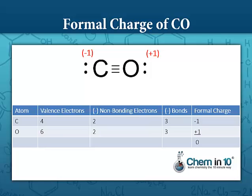So overall the formal charge is zero, but what's unusual with carbon monoxide is that usually the element with the negative formal charge is the more electronegative one, but in the case of carbon monoxide, carbon has the more negative formal charge.